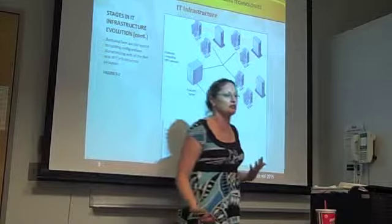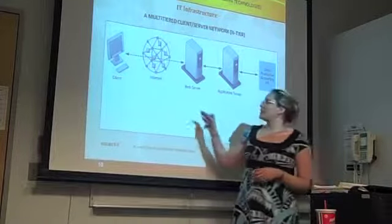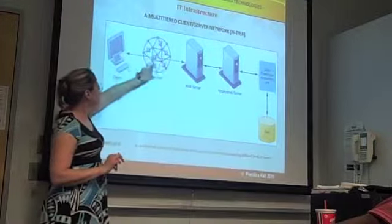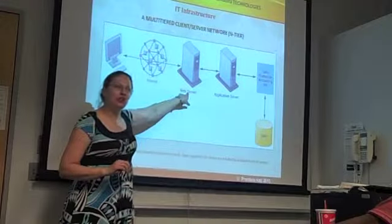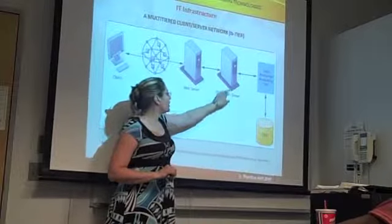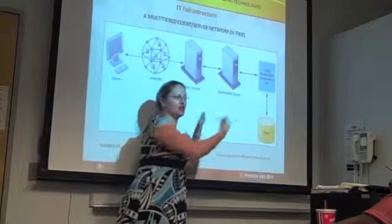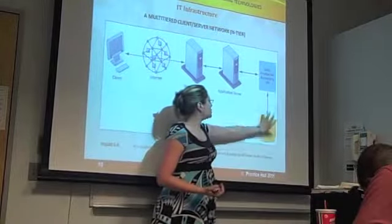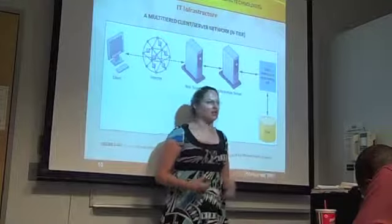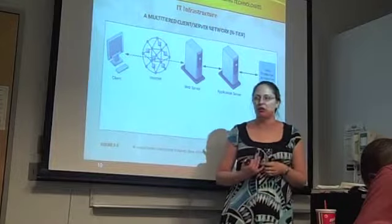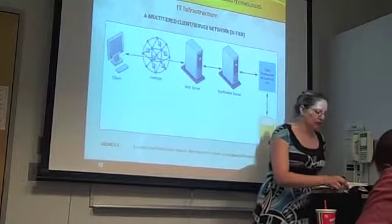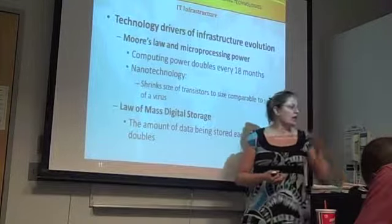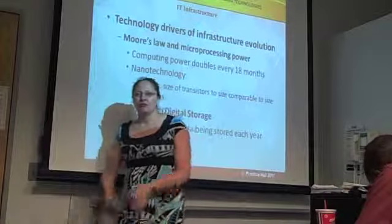Here's an example of a multi-tiered client-server setup: a client connects through the internet to a web server, which connects to an application server — that's what they mean by multi-tiered, having different levels of resources available. After that it connects to a database. In chapter six we'll talk in detail about databases and ways of getting business intelligence out of them.